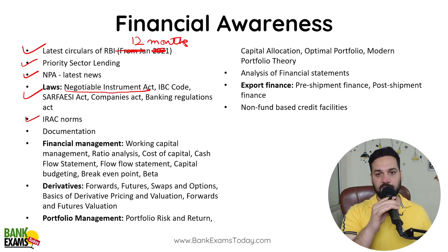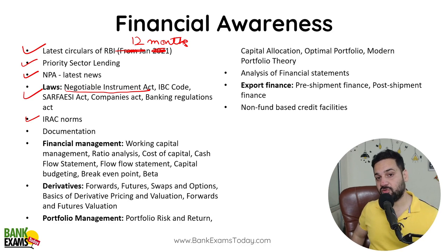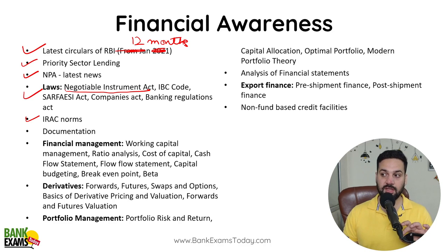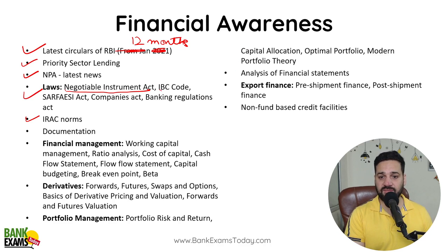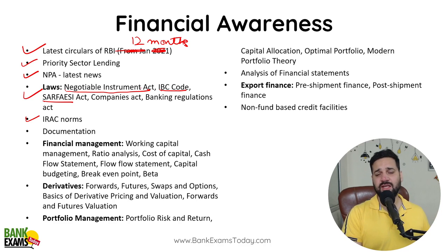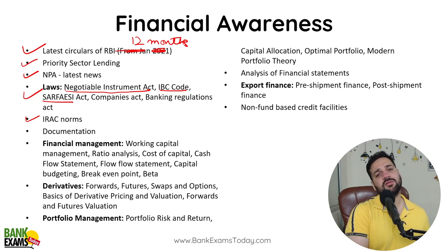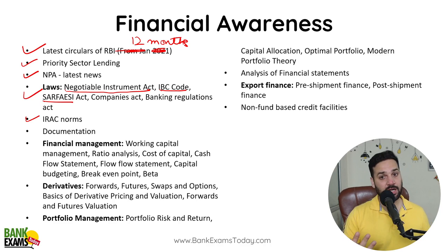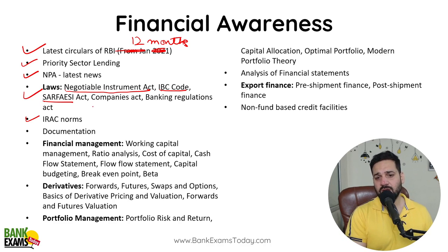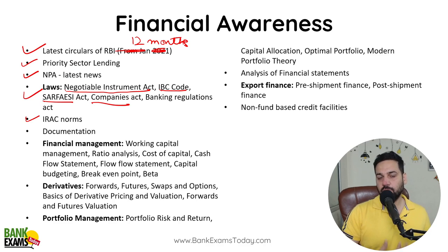IRAC norms and NPA latest news are important. Among laws, the Negotiable Instrument Act is the most important — 2–3–4 questions appear from it. Out of 40 questions, even 2–3 questions make it very relevant for your exam. IBC codes and SARFAESI Act are related — 1–2 questions come from these every year. The SARFAESI Act lecture can be covered in 10–15 minutes; Negotiable Instruments has about 4 videos of 20–25 minutes each, so expect to spend 3–4 hours on it.